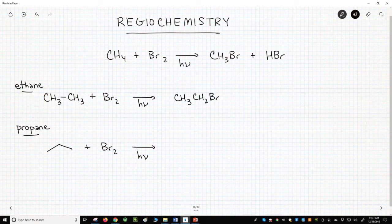What about propane? This gets a bit harder. Propane has two different types of CHs: the CHs on the end carbons and the CHs on the middle carbon.